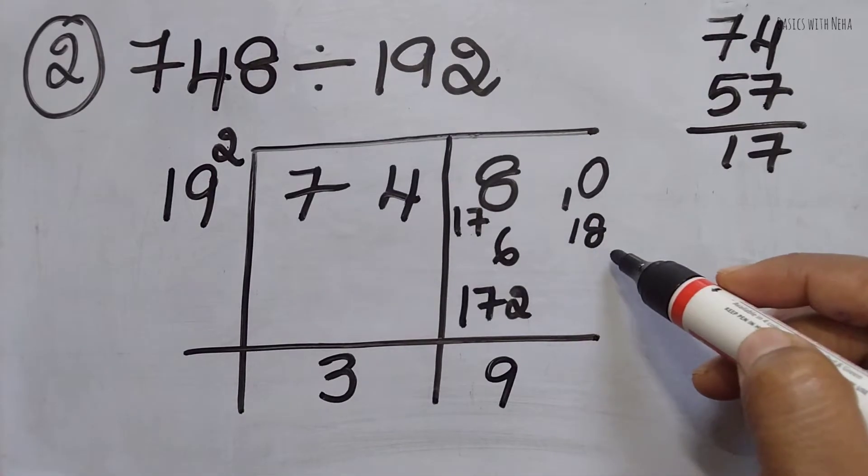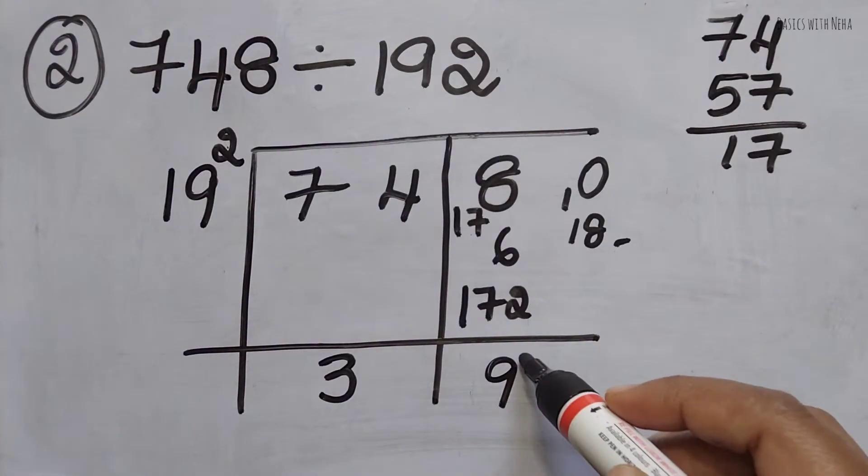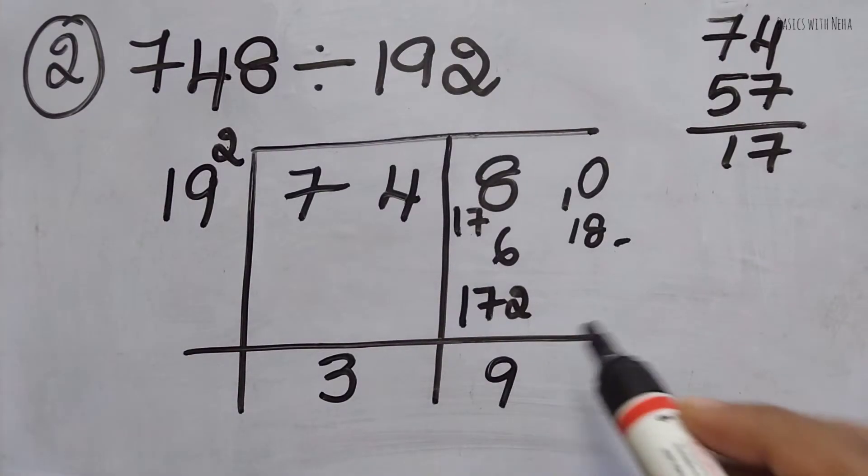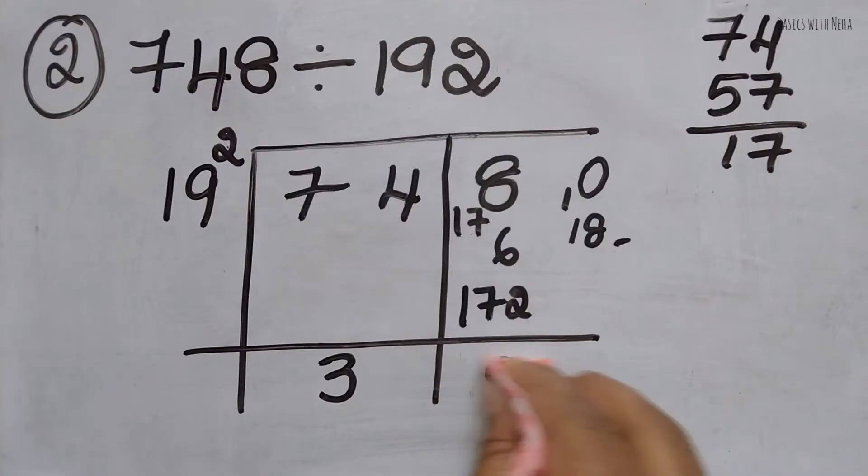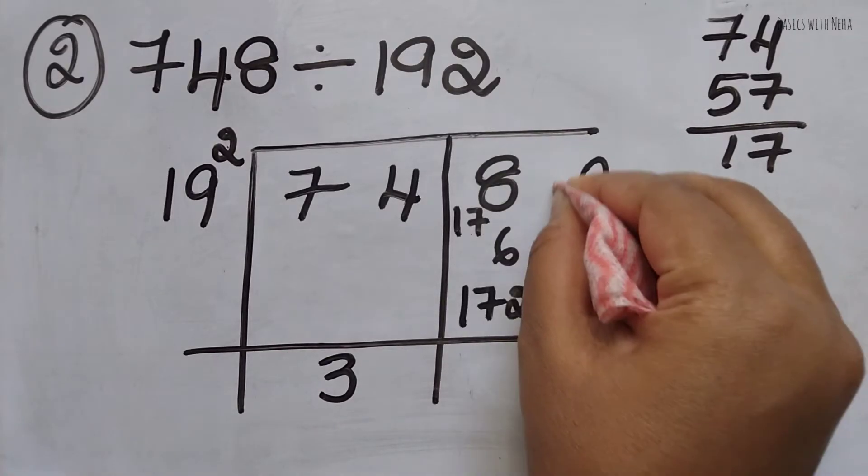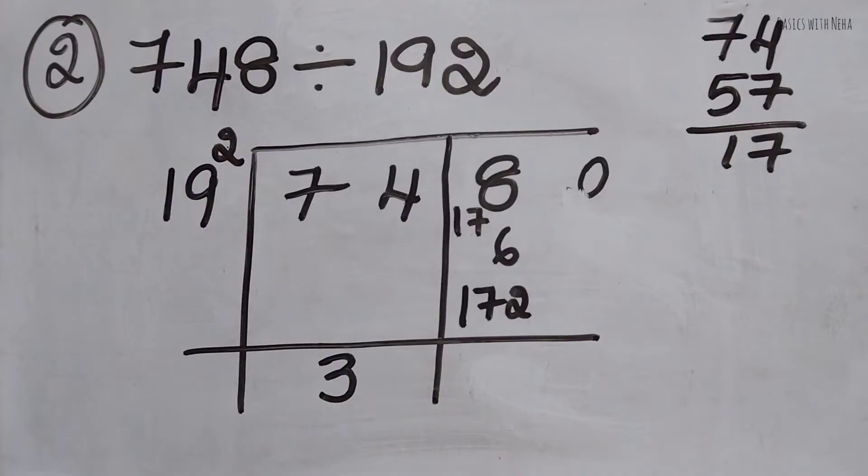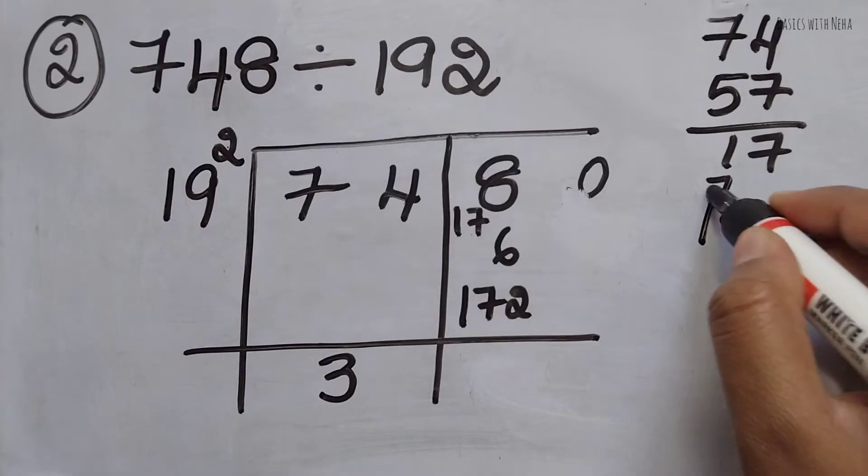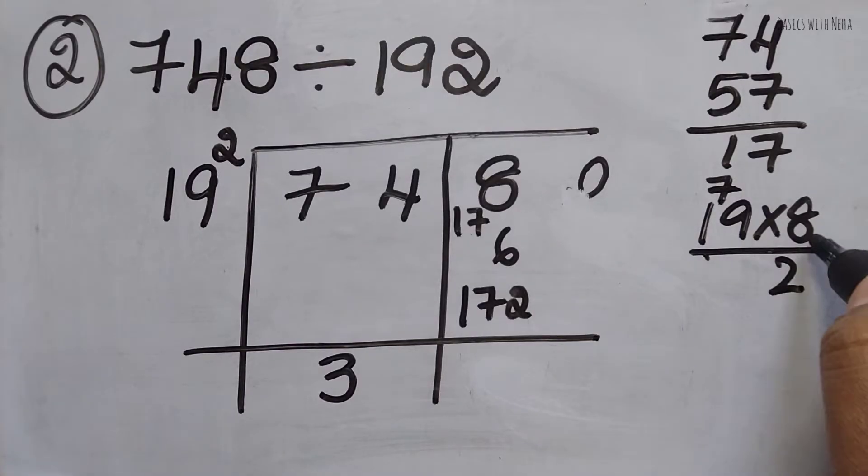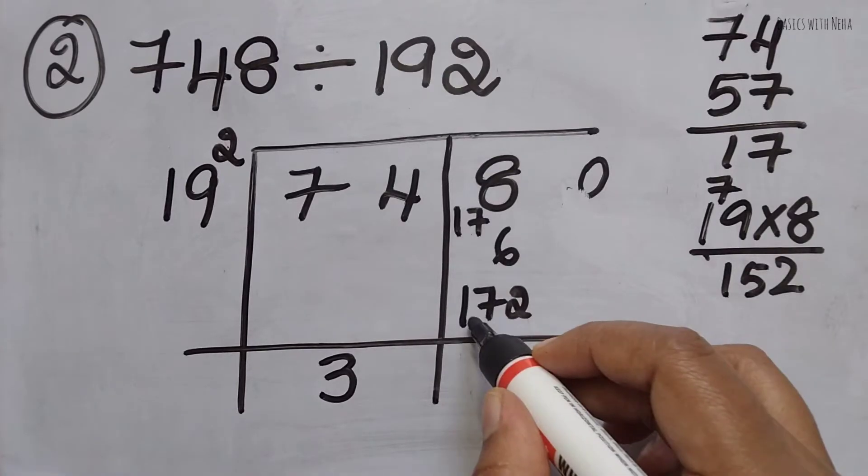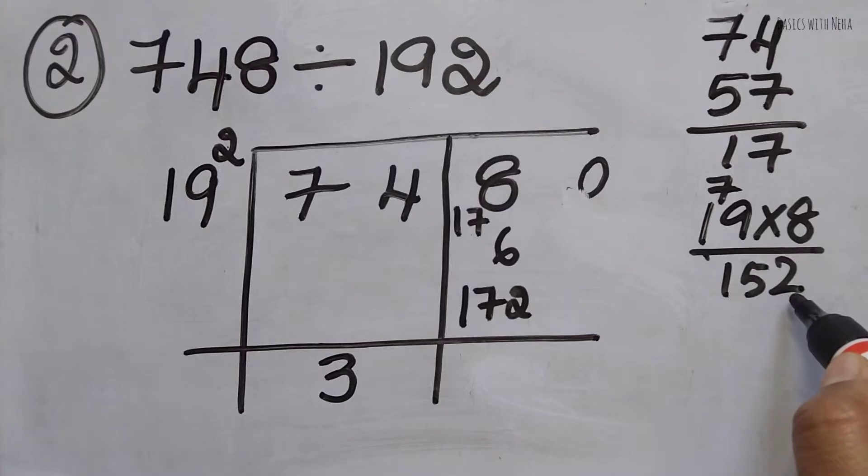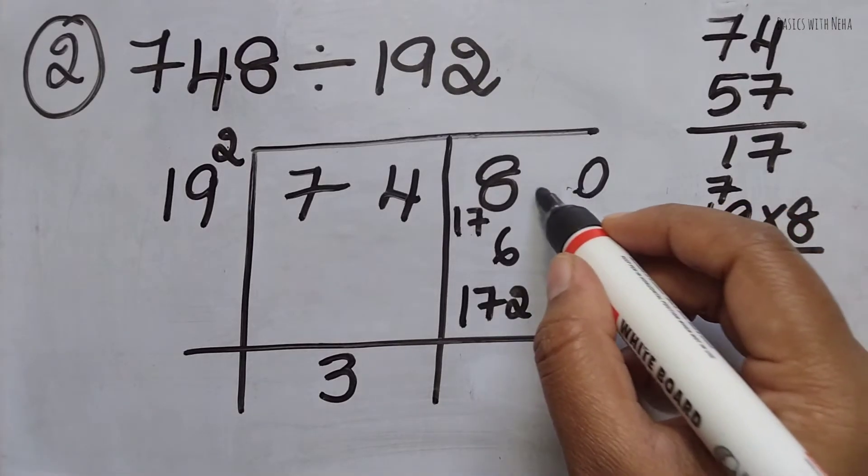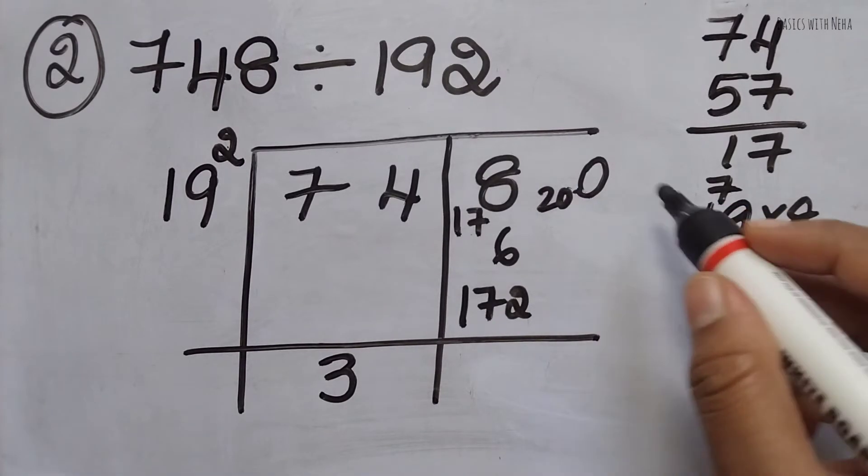Now 9 times 2 is 18. If I take 18, I'll get a negative number. So what I'll do is decrease this by 1. In that case, I have to just take one number less. So it is 19 times 8, which equals 152.